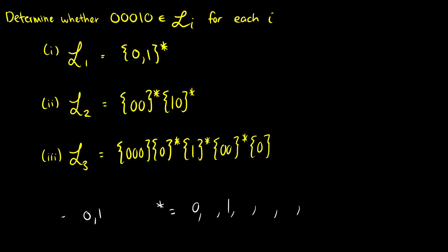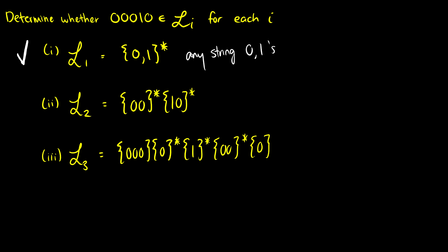Okay, let's take a look at the first one. L1 is (01)*. This basically says we can produce any string of 0s and 1s. So of course 00010 is going to be in this language, because we can produce anything we want.